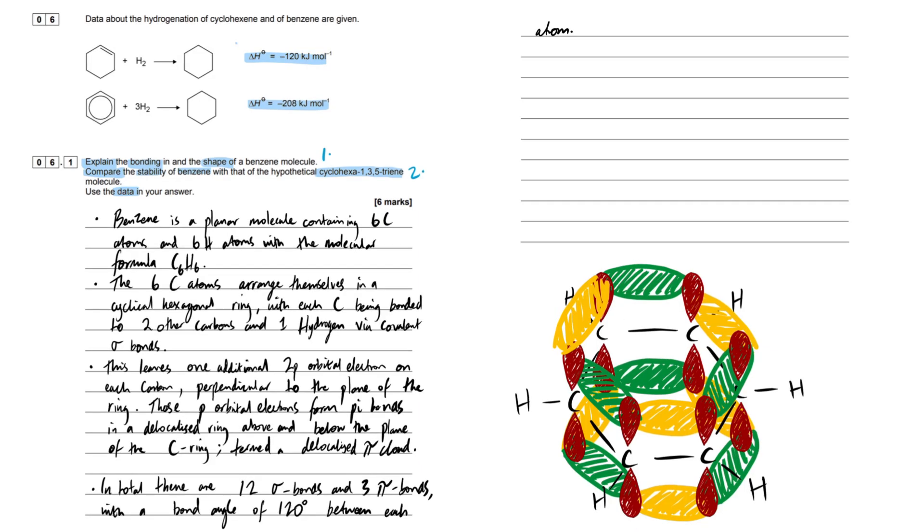Some may be confused about the additional 2p orbital electron - that goes beyond the specification, to do with orbital hybridization. One more bullet point: In total there are 12 sigma bonds and 3 pi bonds with a bond angle of 120 degrees between each atom. Although there's only 3 pi bonds, they delocalize over the entire system above and below the ring.